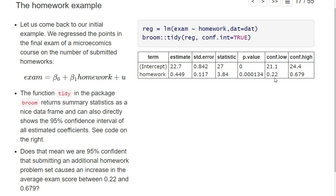We find here this confidence interval between 0.22 and 0.679. Now the question is, does this mean that we are 95% confident that submitting an additional homework problem set causes an increase in the average exam score between 0.22 and 0.679 points?